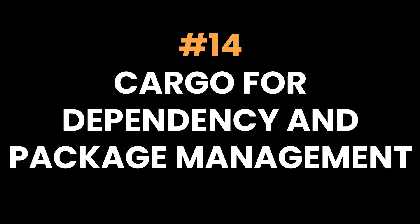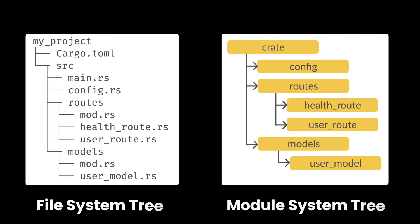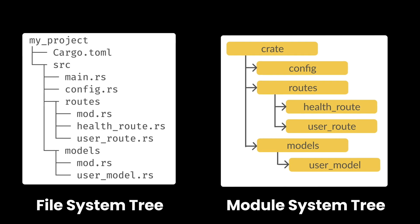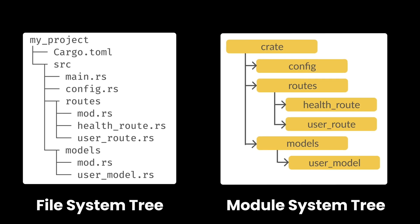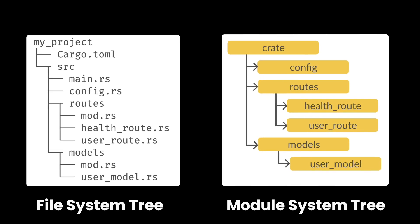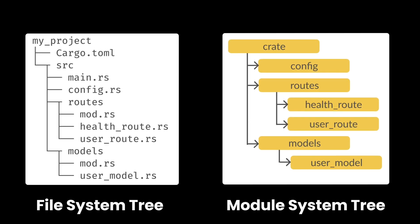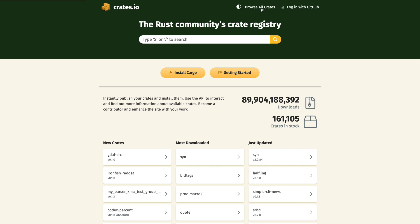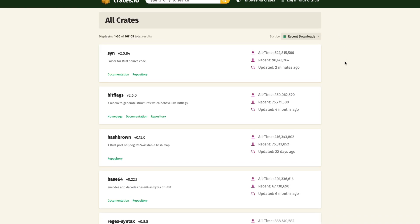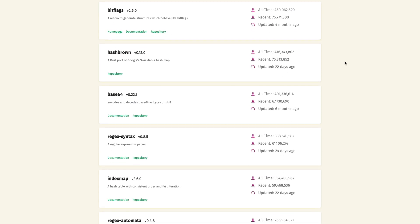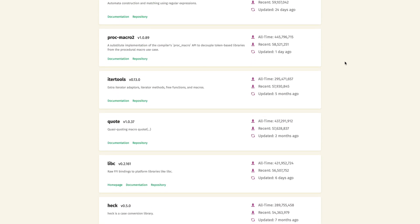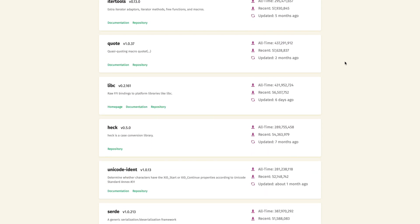Fourteen: Cargo for dependency and package management. Cargo is Rust's powerful build system and package manager. It manages dependencies, builds your projects, runs tests, and more. The Rust ecosystem has an extensive library of crates you can install with Cargo, making it easy to build applications without reinventing the wheel.